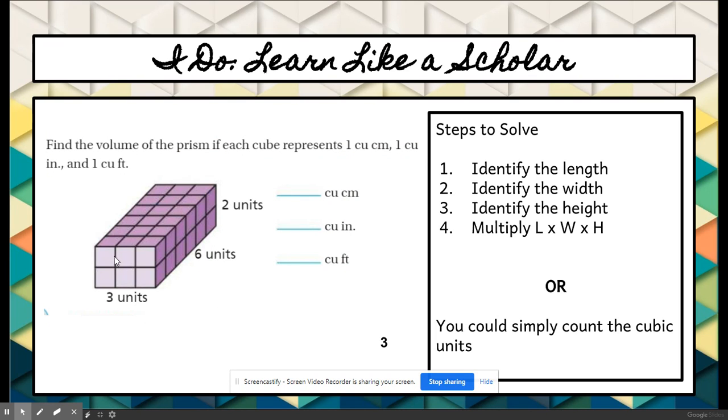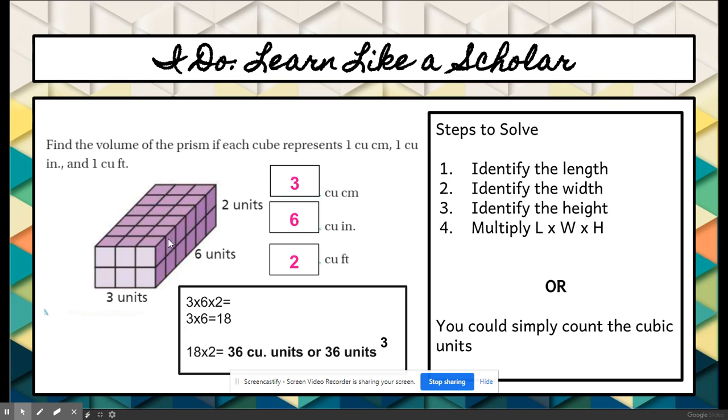For example here, do you really want to spend about 5 minutes trying to count those out and then wondering if you're accurate? Or would you rather make sure you're accurate by identifying the length? So how long is this? It is 1, 2, 3 cubic centimeters long. How wide is it? What's the width? 1, 2, 3, 4, 5, 6. And how high is it? That would be 2. Now to find the volume, we would multiply 3 times 6 times 2. Multiply two at a time. 3 times 6 is 18, and 18 times 2 is 36. So 36 cubic units or 36 units and then that 3 as the exponent tells us it's cubed.